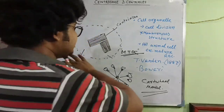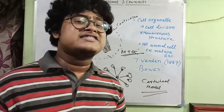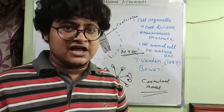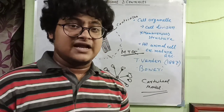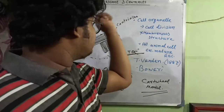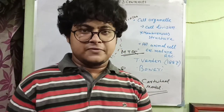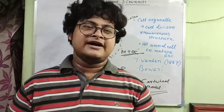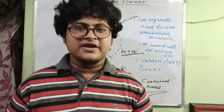The basal body is a structure that gives rise to cilia and flagella — it is a highly conserved centriole-like structure. This is the complete overview of centrosome and centrioles. Hope you liked this video; please hit the thumbs up, subscribe to the channel, stay happy, and keep learning. Thank you.